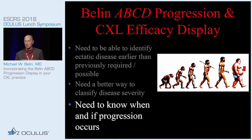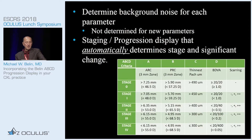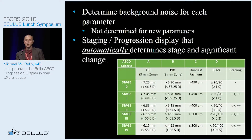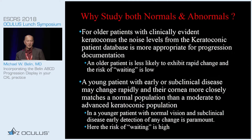The real goal of this was not just a classification — it was to take this and utilize it in a progression display, because we really need to know when and if true progression occurs. To do that, we needed to know the actual background measurement noise of each of these parameters. The A and B were new parameters, so we decided it was important to study both normals and keratoconics to determine the noise levels.